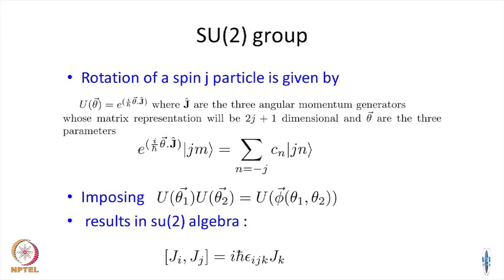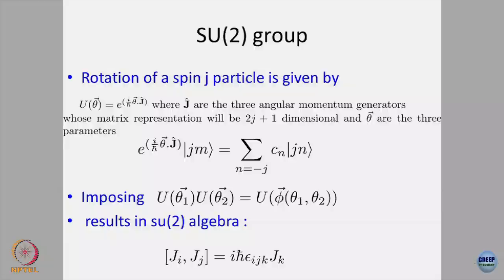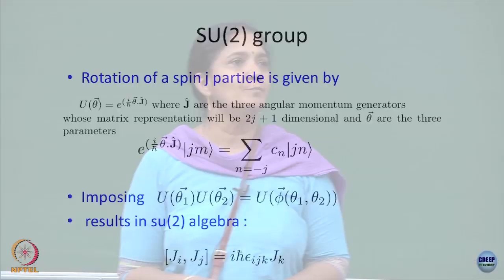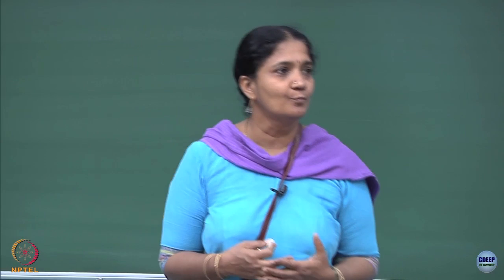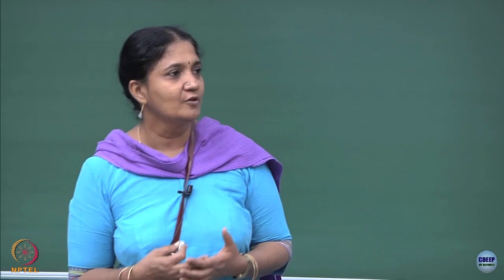Let us start. I am going to confine now to the SU(2) group. By now you should all know the usual group notation: S denotes the group element should have determinant plus 1, U is for unitary groups, and 2 denotes that the lowest non-trivial dimension of the representation of the vector space is 2-dimensional.